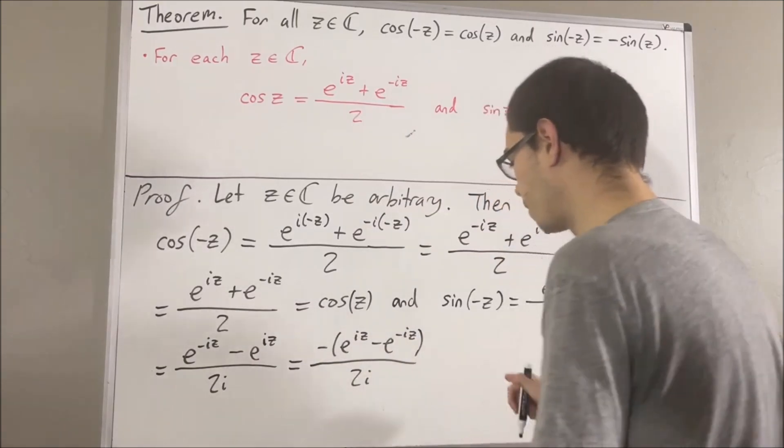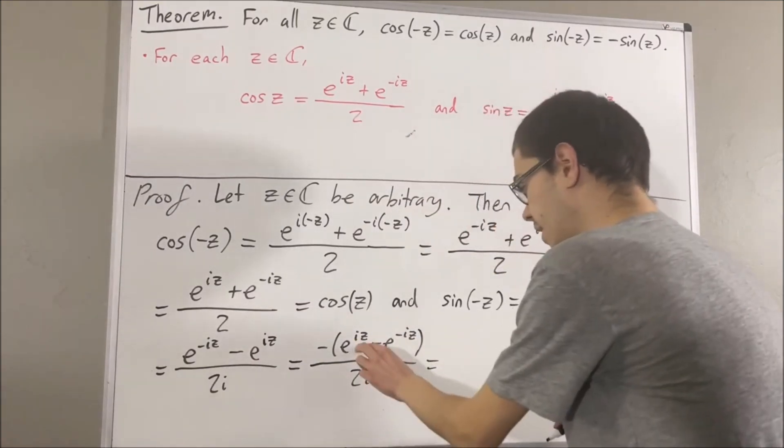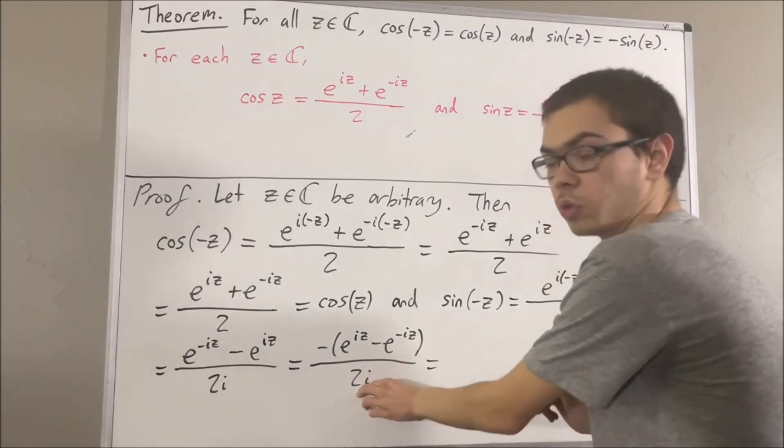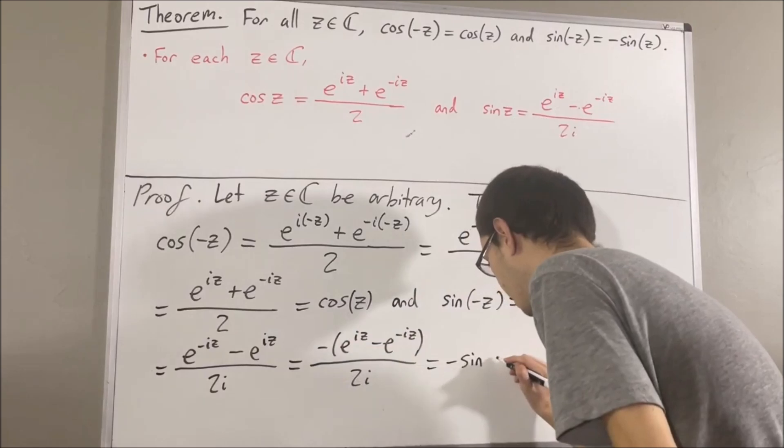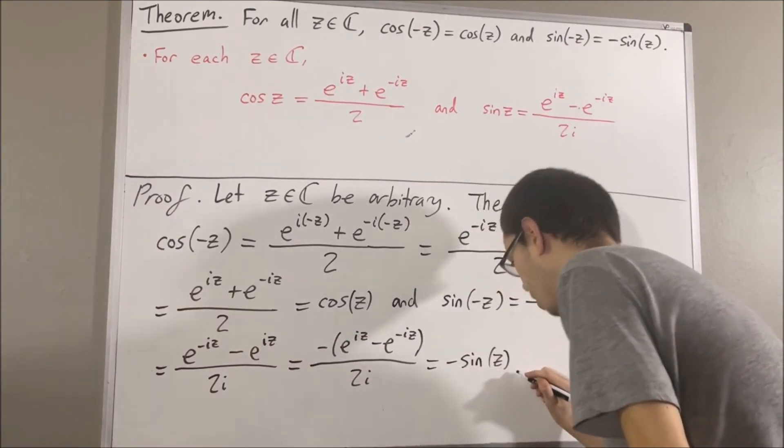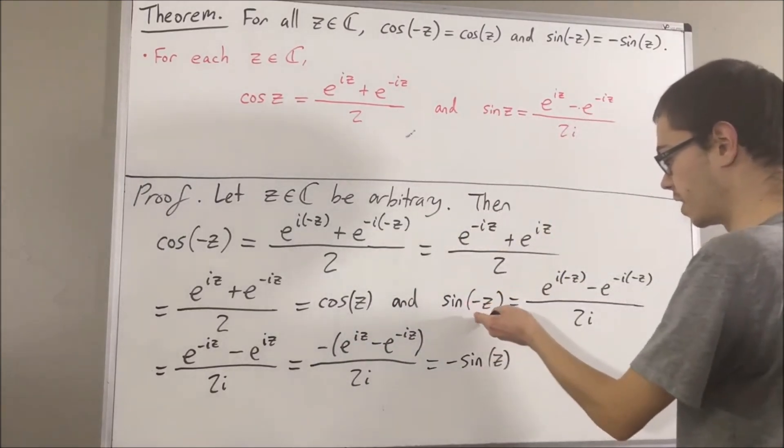By definition, e to the iz minus e to the negative iz over 2i equals sine of z. So this is just negative sine of z, and we've shown that sine of negative z equals negative sine of z.